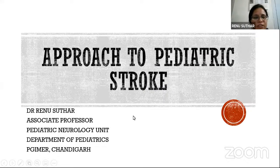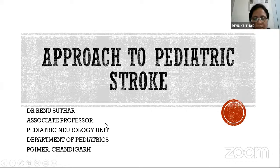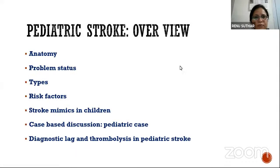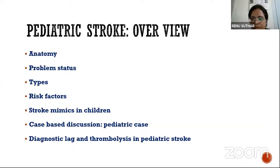This lecture covers disability and classification, stroke classification, how it differs from adult stroke, and how it differs between developed countries and Indian settings. The outline includes an initial brief discussion about anatomy, the current problem status of pediatric stroke, what kinds of pediatric strokes we are seeing, what the risk factors are, what the mimics of stroke in children are, and some case-based discussions on diagnostic lags and thrombolysis in pediatric stroke.